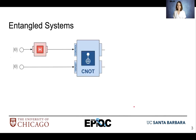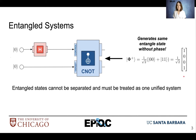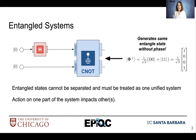Let's review two-qubit entanglement. If we take two qubits in state ket-0 and pass one of them through an H gate, and then both of them through the CNOT gate, we get a same entangled state without phase — meaning we have a ket-00 and a ket-11. Here we have the bra-ket notation and the vector notation. Entangled states cannot be separated and must be treated as one unified system, even if they're a large distance away. Action on one part of the system will directly impact the others.